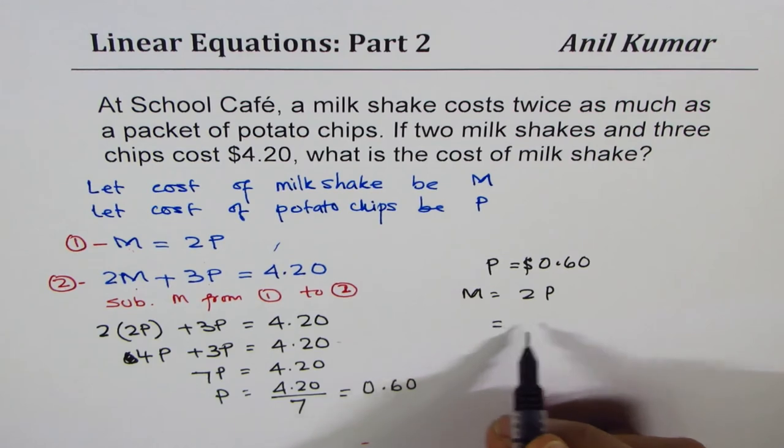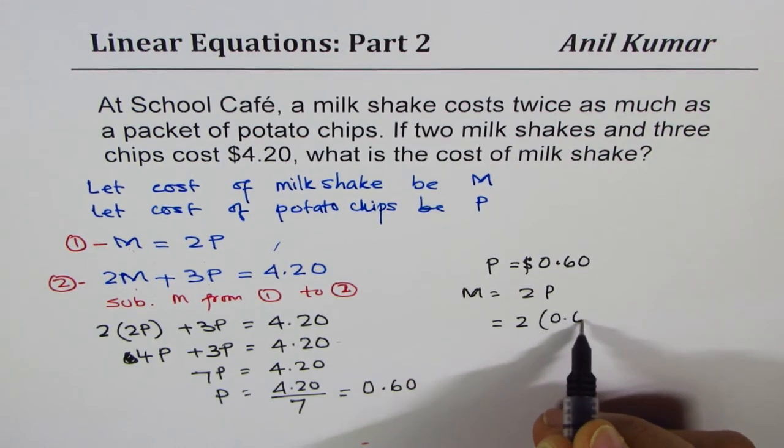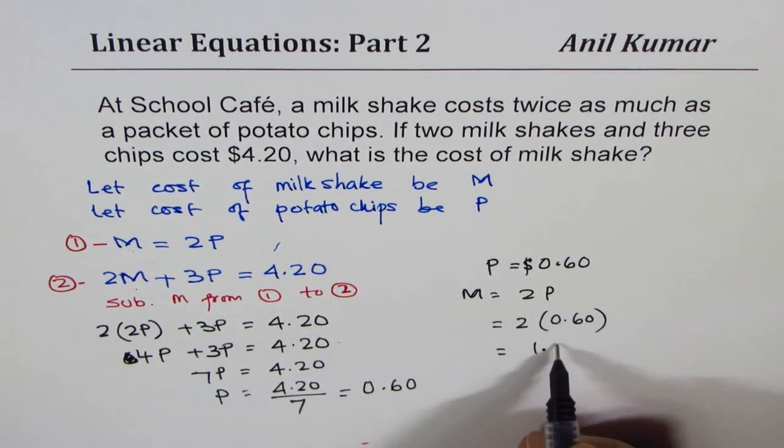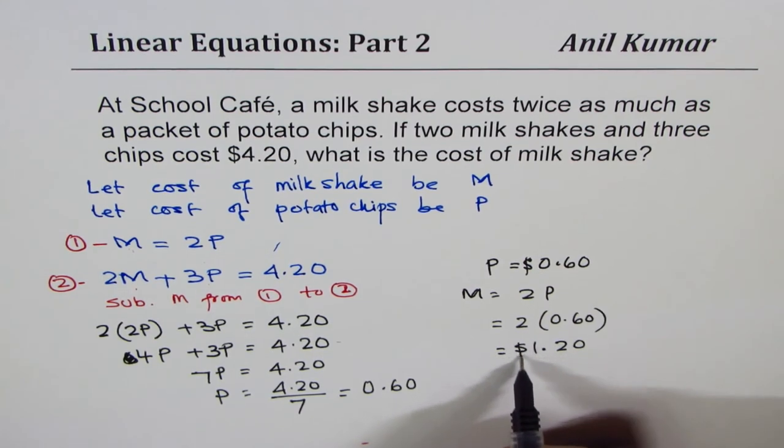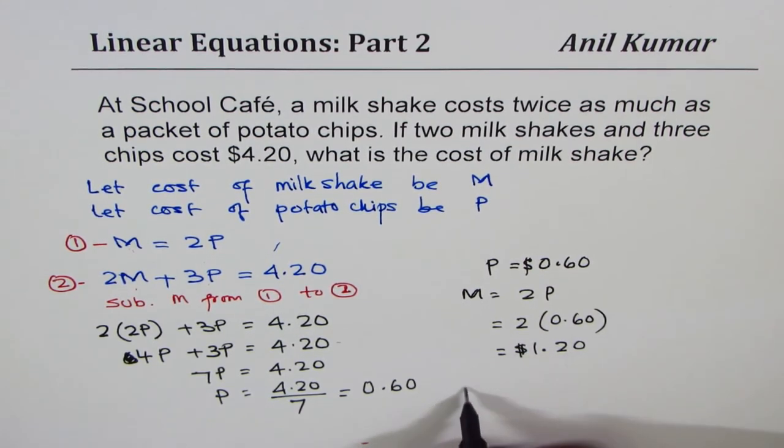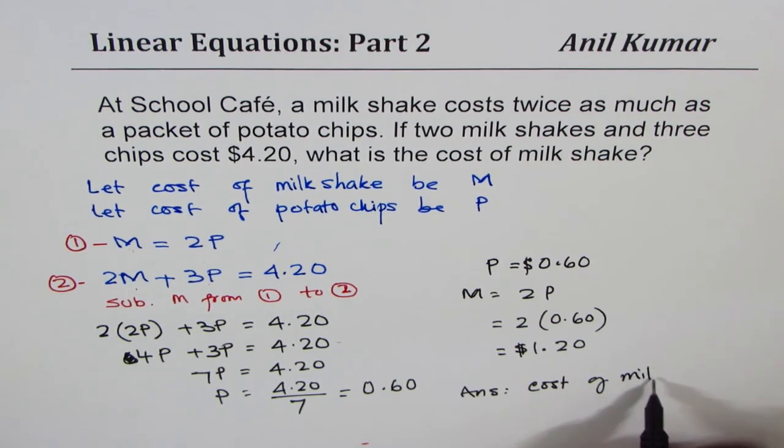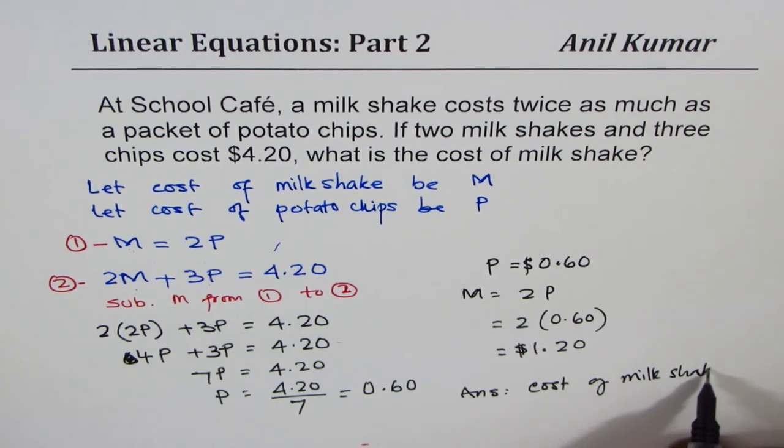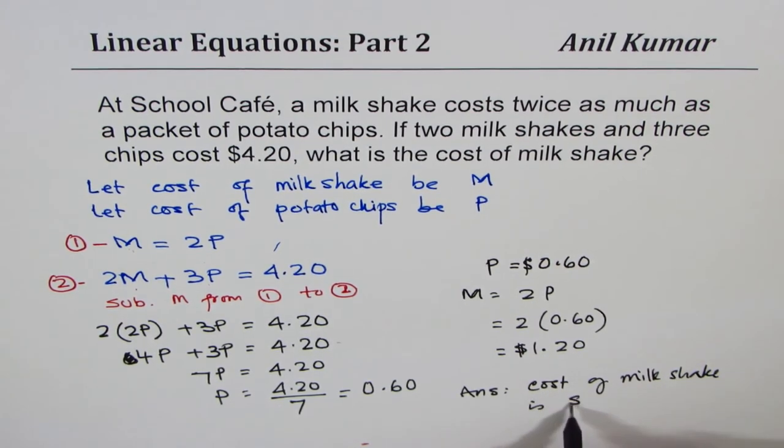That means $1.20. Our answer is: the cost of milkshake is $1.20. That is how you solve such questions. I hope that helps. Thanks for watching.